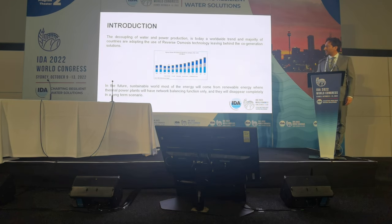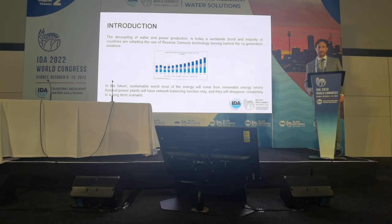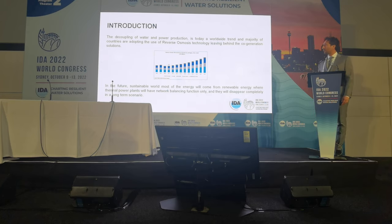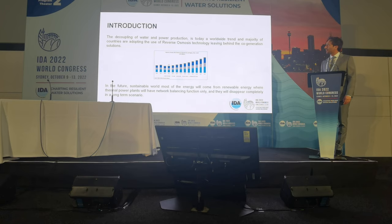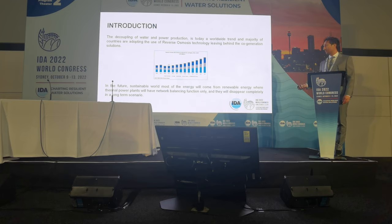This graph shows how reverse osmosis has conquered the market. The decoupling is part of this fundamental change — we are decoupling water production from power production. Before, co-generation was common; now reverse osmosis is more convenient in terms of energy consumption. In the future, only electricity will be used, and ultimately only renewable energy should be used.